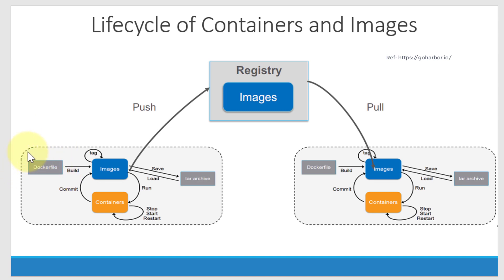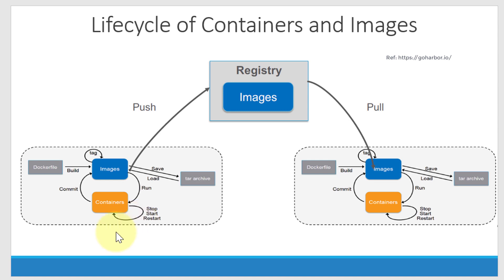Once you build the Dockerfile, it generates an image. An image is nothing but a snapshot of that specific container — you can think of it as a template. You can tag the image with various versions based on what change was included. Once the image is ready, you can run it and that will create a container and bring it to the running state. You can stop, restart, and terminate that container as needed, and once it's running, you can make further changes and create a new image with a different tag.